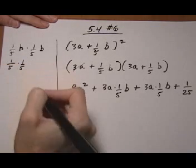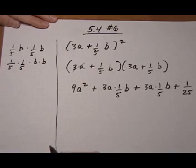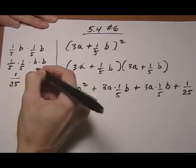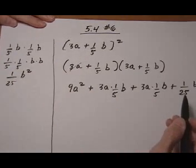I can rearrange the order times b times b. 1 fifth times 1 fifth multiply across the top across the bottom. We get 1 twenty fifth, b times b is b squared. And that's where this final term right over here came from.